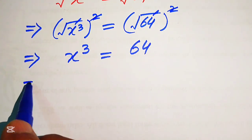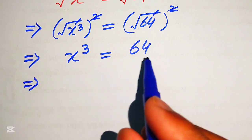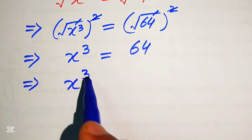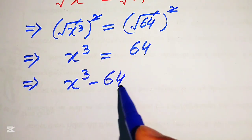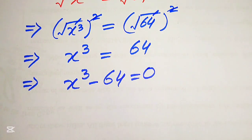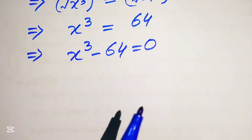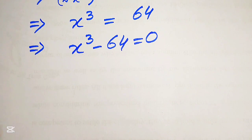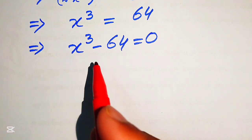In the next step, we move 64 to the left-hand side and it will be written as x cubed minus 64 equals 0. You see this equation becomes cubic in the variable x, so we can apply the cubic formula in order to solve this problem.